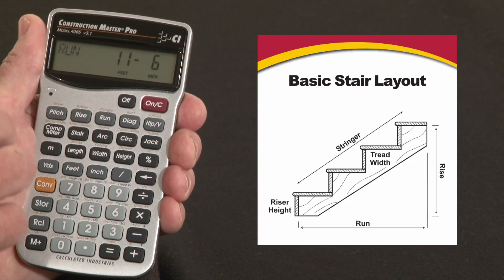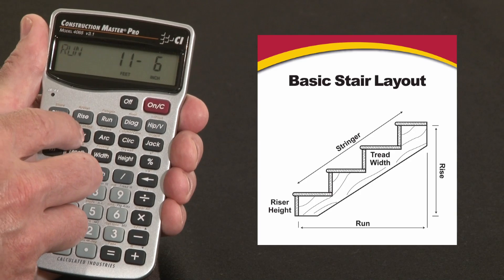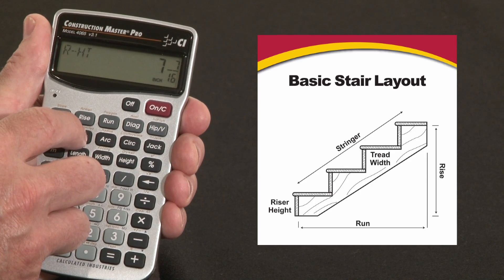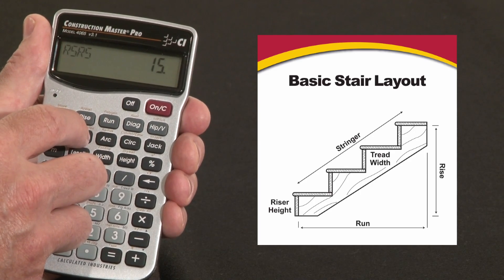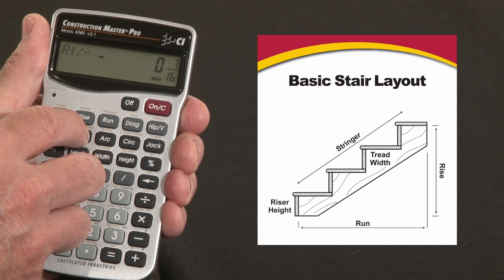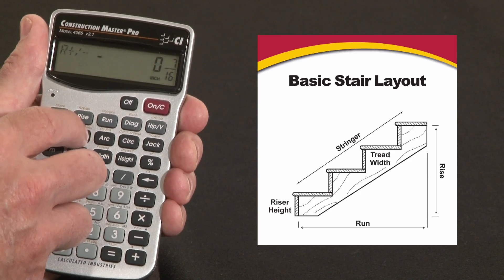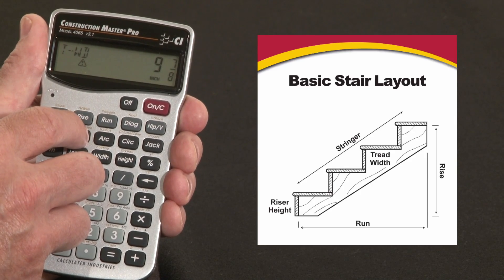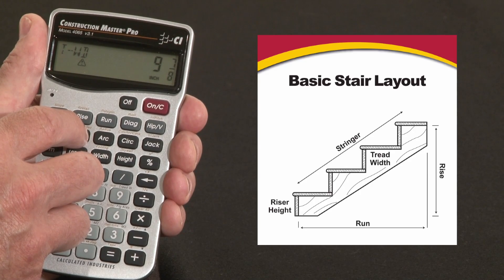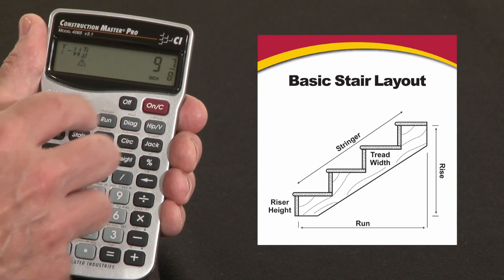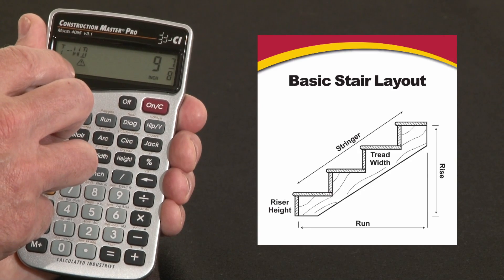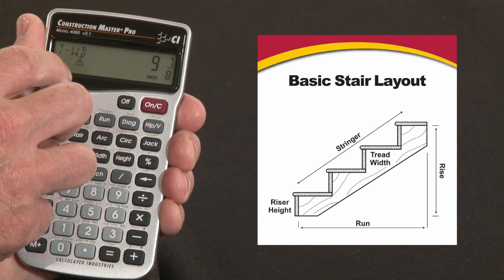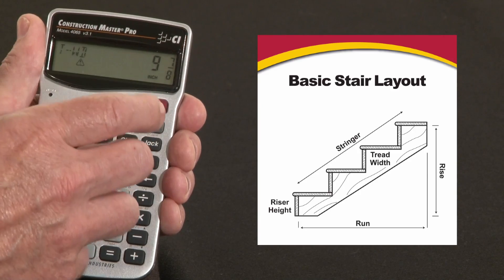The floor-to-floor drop or rise remains the same, so we come back to the Stair key and press it. The riser height is still 7 and 7/16, still 15 risers, still the same adjustment of 7/16 of an inch. But now when we get to tread width, it's changed — it's no longer the default 10 inch tread width, it's 9 and 7/8. There's a little triangle alert symbol there, just letting you know that the calculated tread width is a little bit less than your target.